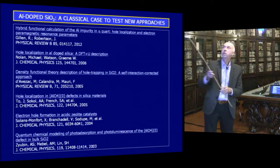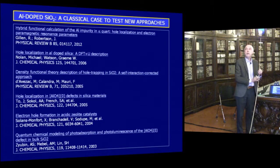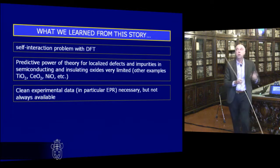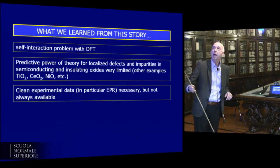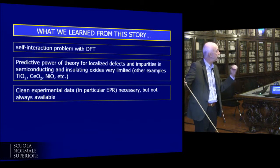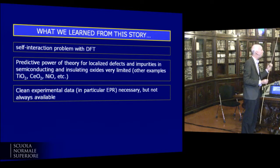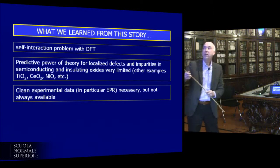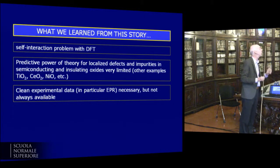What we learn is that DFT has problems with self-interaction description. There is a very negative message: the predictive power of theory in this case is extremely low. Without experiment, we cannot have a firm conclusion about the distribution of unpaired electrons. So we need clean experimental data — in particular, electron spin resonance. But this is not always available.